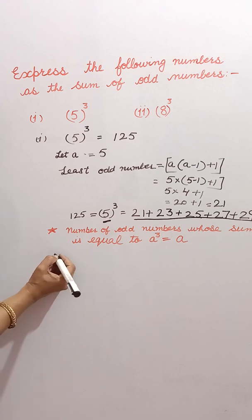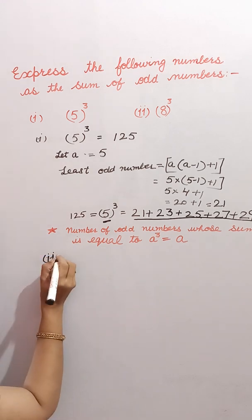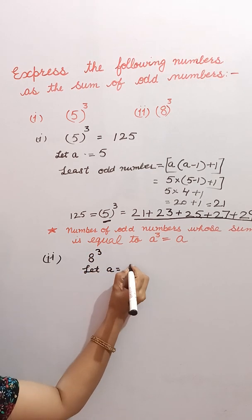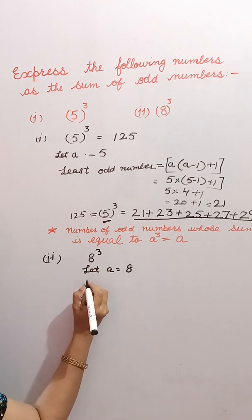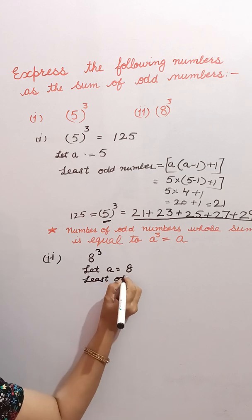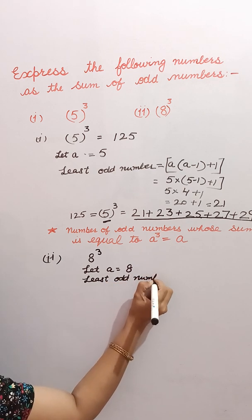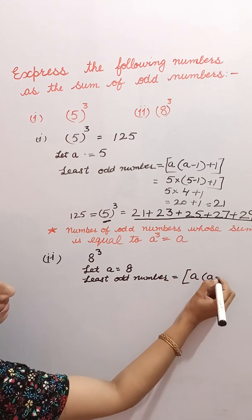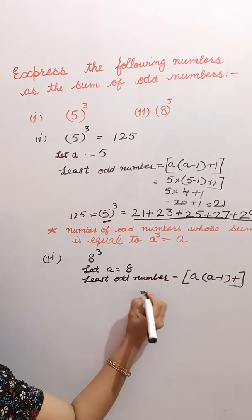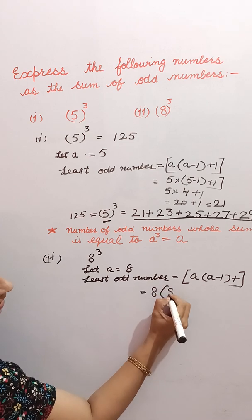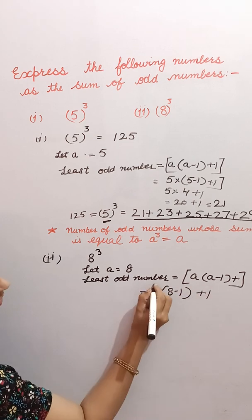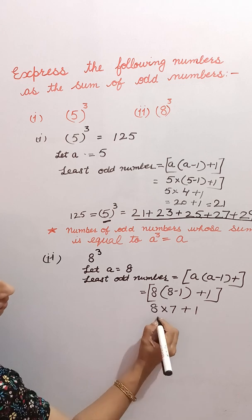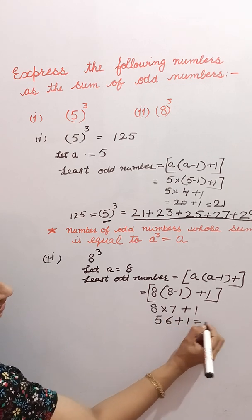Let's take another example: 8 cube. Let A equal 8. Now, to find out the least odd number: it is equal to A(A minus 1) plus 1. That is 8 multiplied by 7 plus 1, which gives 8 into 7 equals 56, plus 1. That is 57.